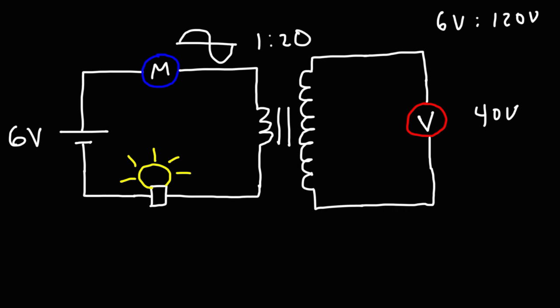This means that the right side of the transformer has 20 times more coils of wire than the left side. So if we were to apply an AC voltage of 1 volt on the left side, the output voltage would be approximately 20.